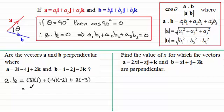And so if you work this out, you find you end up with 5. 5's not equal to zero, so the conclusion is then that the vectors a and b are not perpendicular.